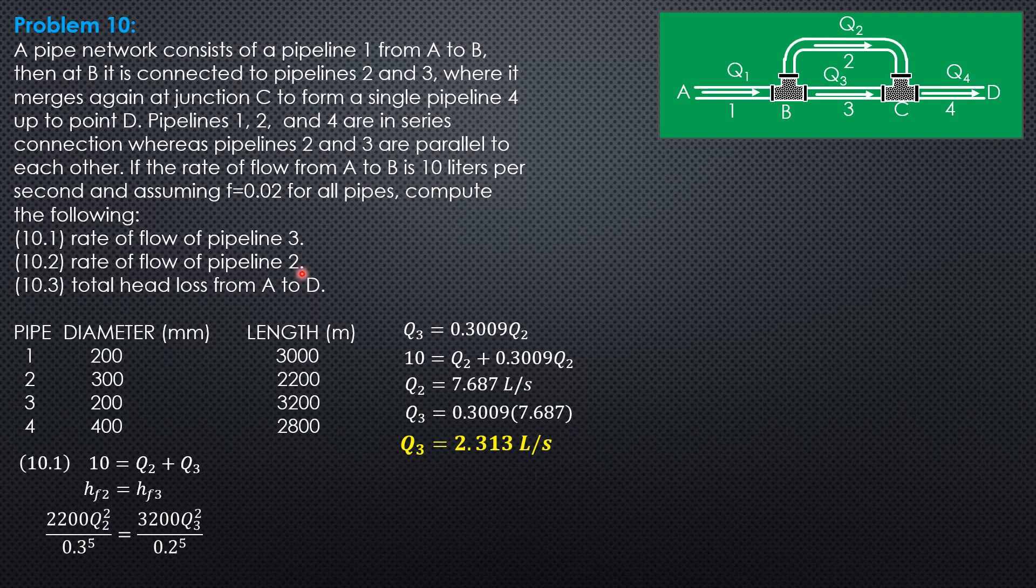Then, the rate of flow in pipe 2, 7.687. Already answered.